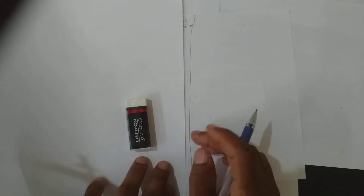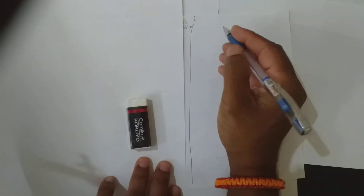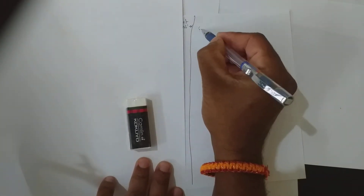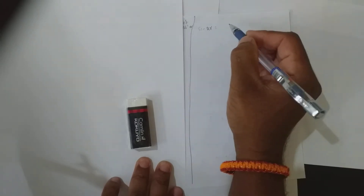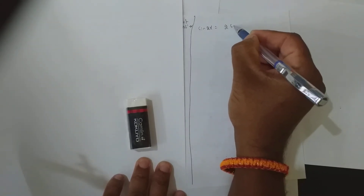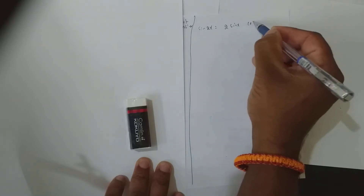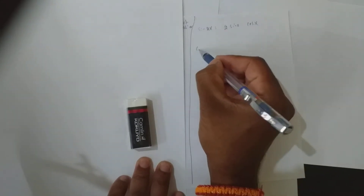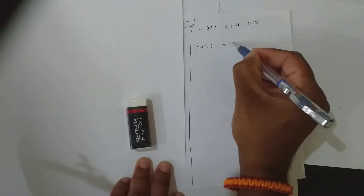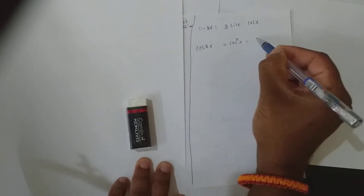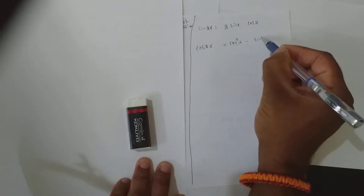Good morning students. Let us continue with A-level trigonometry. I wanted to tell you this formula. Sin 2x — what was the formula I told earlier? It is 2 sin x cos x. And cos 2x is cos²x minus sin²x.